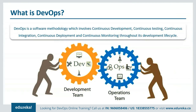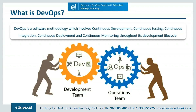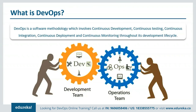Let me first brief you on DevOps. DevOps is basically a software development strategy which bridges the gap between the dev side and the ops side of the company. In simple words, DevOps is a software methodology which involves all the steps from continuous development, continuous testing, continuous integration, continuous deployment, and continuous monitoring throughout its development lifecycle — building, testing, compiling the code, and finally putting it onto the production servers.